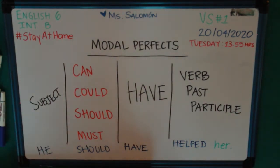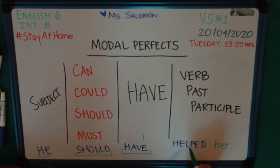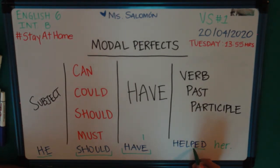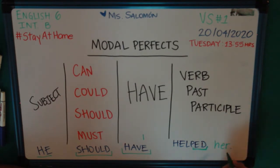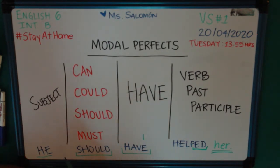Notice that we are using a subject, which is 'he.' We are choosing our modal perfect, we are using 'have,' and we are using the verb in past participle, which is 'helped.' This is of course a regular verb, so we would just add the '-ed' to the verb. This word right here is just a complement for the object of this sentence. This sentence is saying that it was a bad call or a bad decision not to help her when he did.